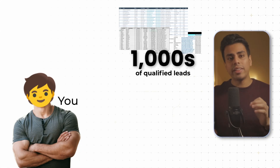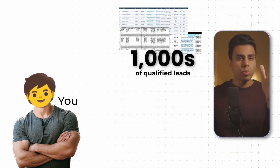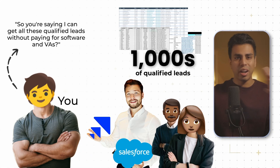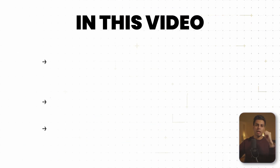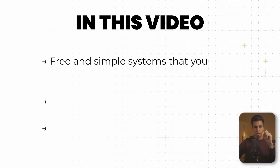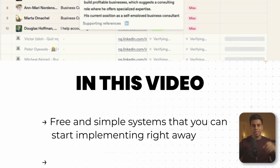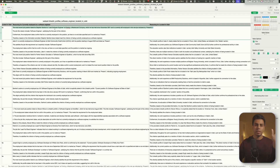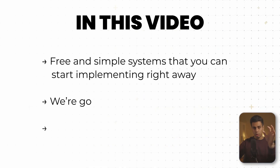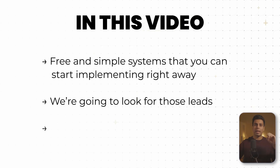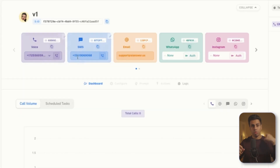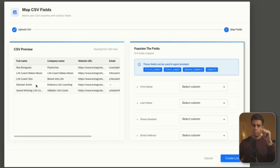What if you could get thousands of qualified leads in a few minutes without paying for expensive software or even hiring a single VA? In this video, I'm going to show you a free and simple system that you can start implementing right away to generate thousands of high quality leads for any industry or niche. We're first going to look for these leads, and then I'll show you how to set up an outreach system so you can reach out to all these leads on autopilot.